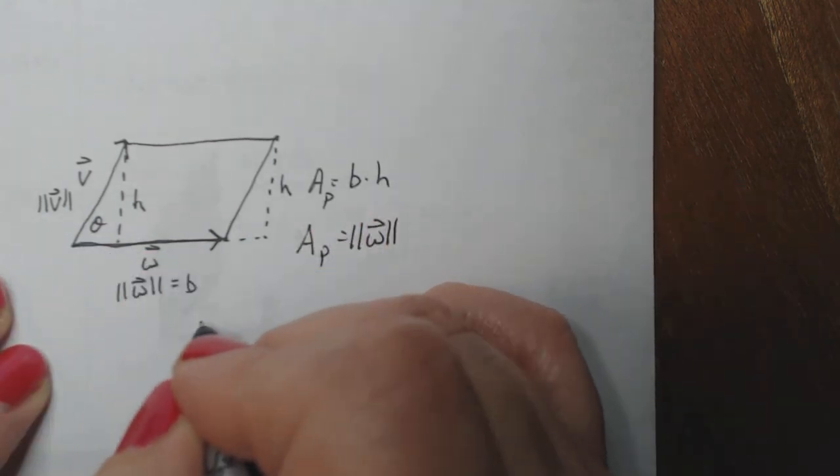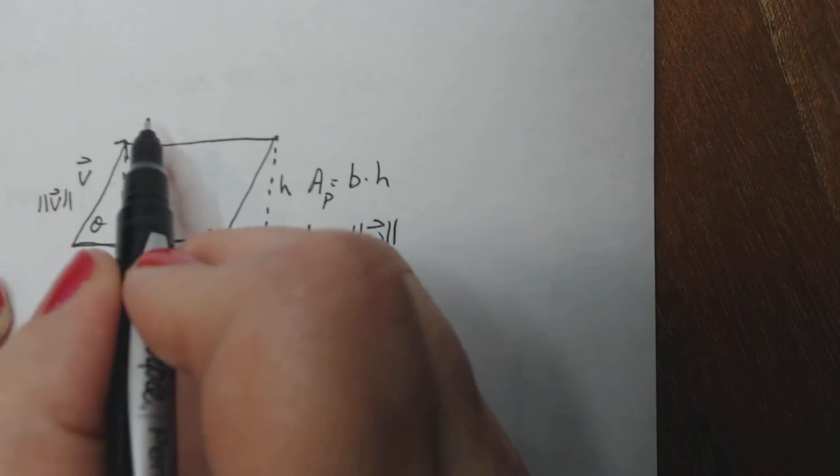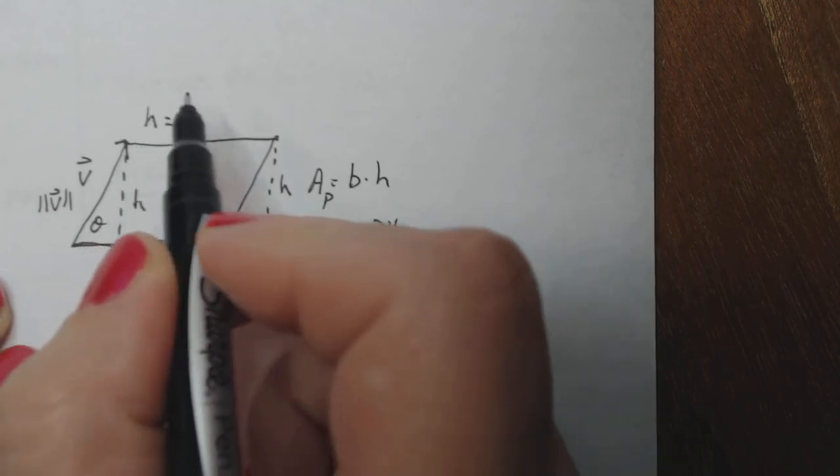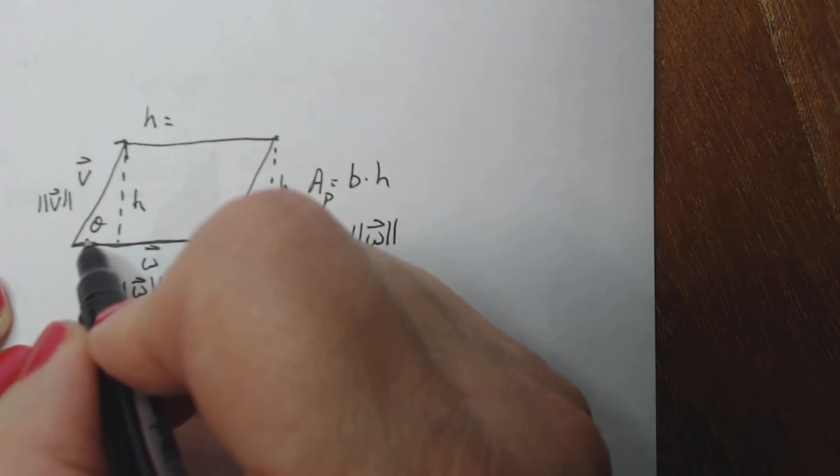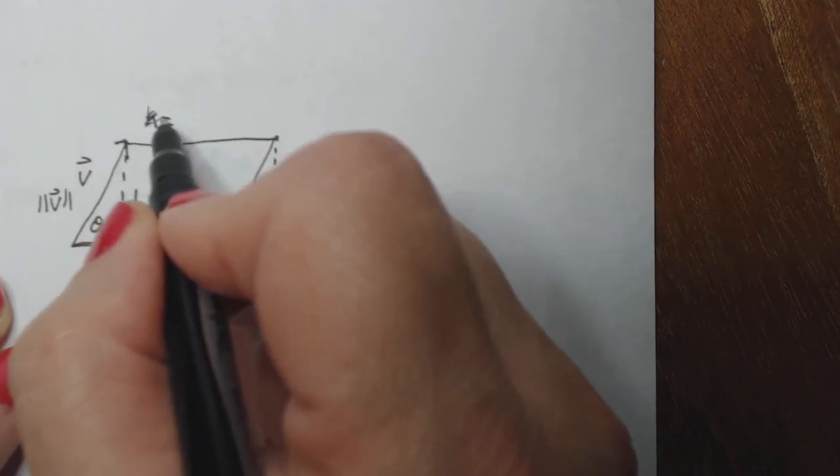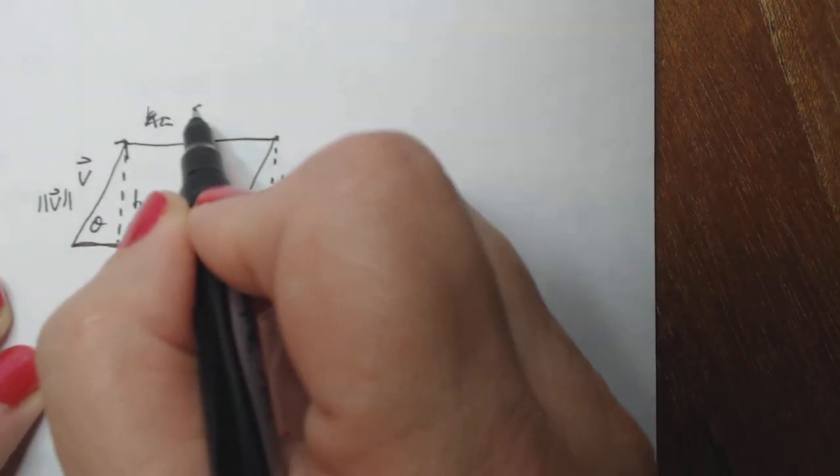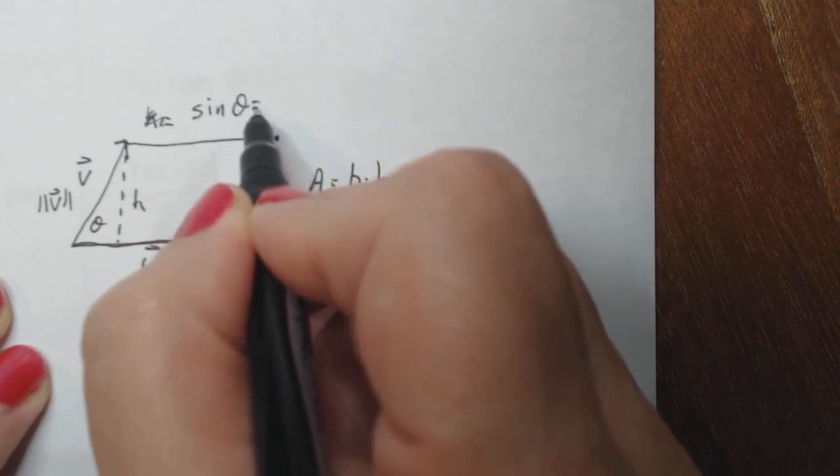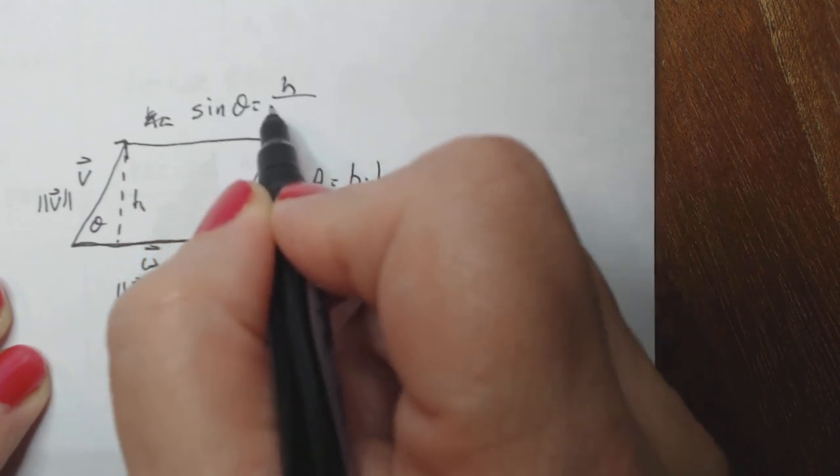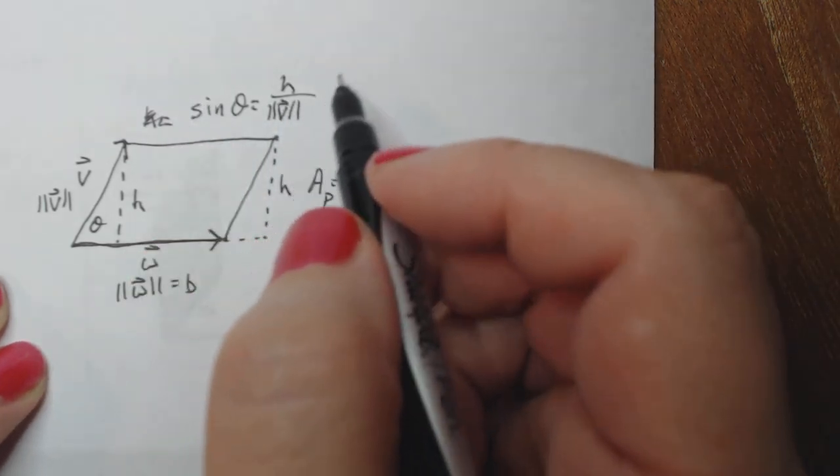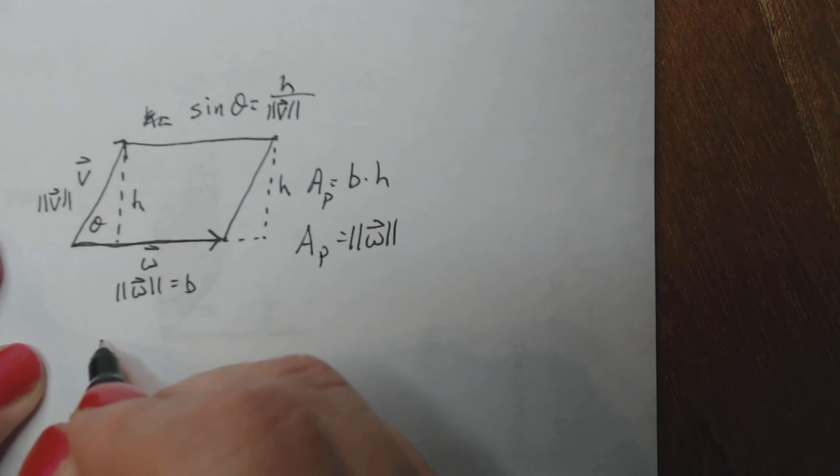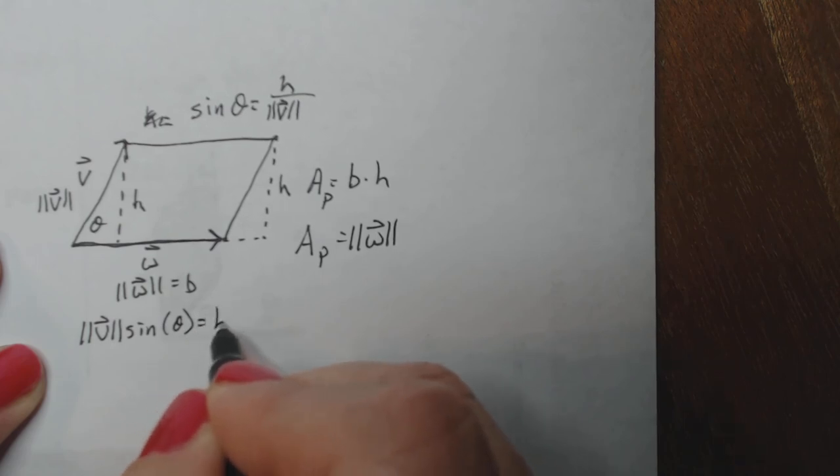Now the length of this side, if that's the vector V, then the length of it is the magnitude of V. So then my height, let me write it up here. My height will be equal to, let's see. Well, let's try it this way. Sine of theta equals opposite over hypotenuse. So if I solve for H, I just multiply both sides by magnitude of V.